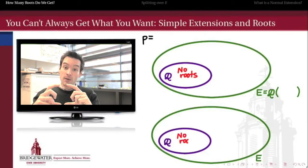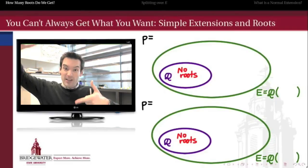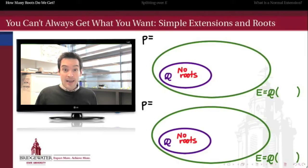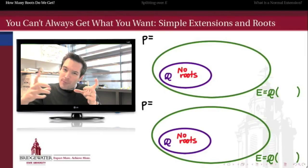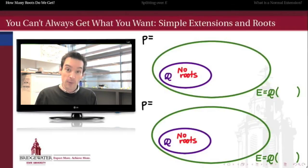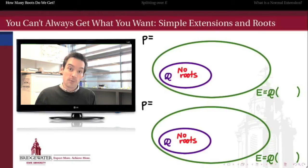Recall what was said in the last video about the extension to get a root of an irreducible polynomial where there was no root before: we'd like to build a field which is a little bit bigger than the rationals and which has a root of that polynomial. So the point is, just because we get a root of p when we extend does not mean that we necessarily get all roots of p when we extend.